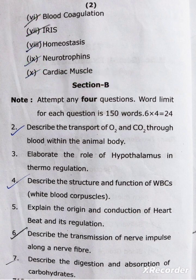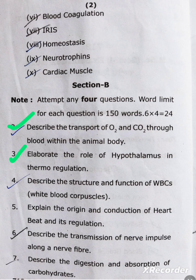Now we go to Section B questions. Question number two: describe the transport of oxygen and CO2 through blood within the animal body. Question number three: elaborate the role of hypothalamus in thermoregulation. Question number four: describe the structure and function of WBC, white blood cells.